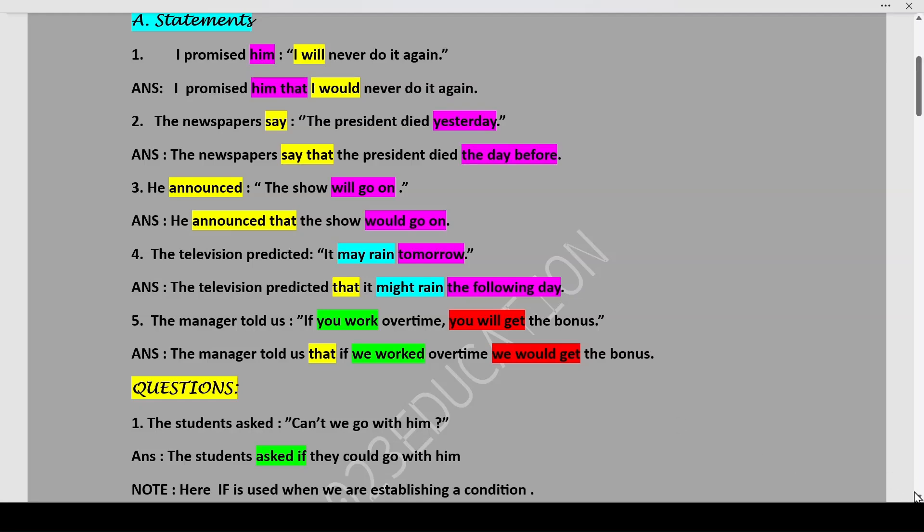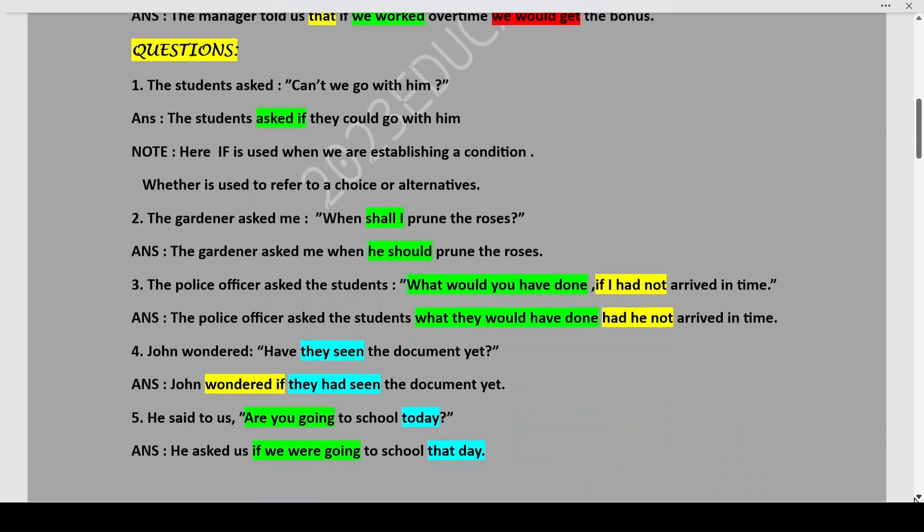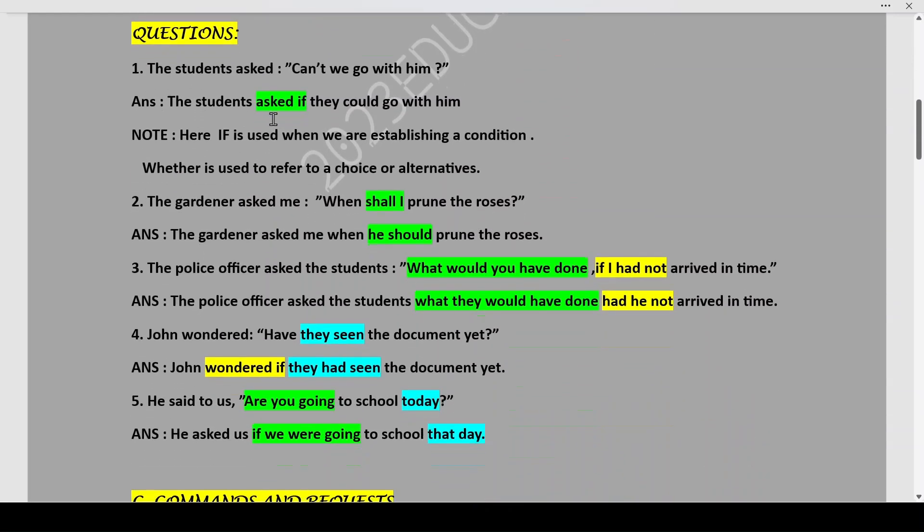Now, for questions, how are they going to change? The students asked, can't we go with him? The students asked if they could go with him and the question mark is removed. The apostrophe quotation marks are removed and we add a conjunction or a conditional word called if. The students asked if they could go with him.